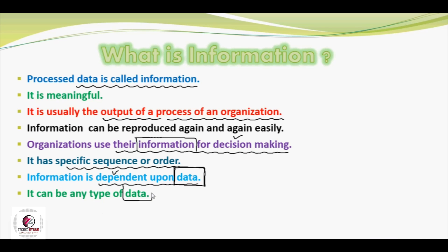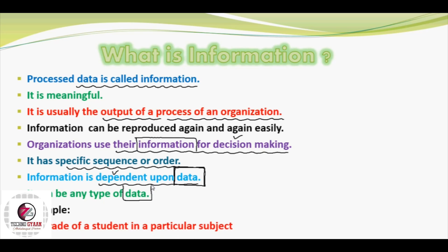Information depends on data, and it can be any type — just as data can be text, numeric, image, audio, or video, similarly information can be of any of these types. The reason is that when we process an image, the output is also an image; if we process text and numbers, the output is the same form. So information can be any type. For example, after processing the numbers of students, we calculate the student's grade — this grade represents information about that particular student.